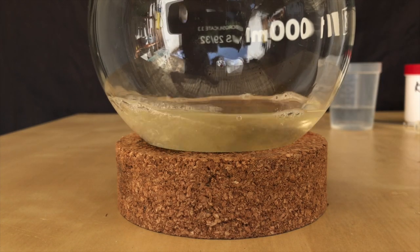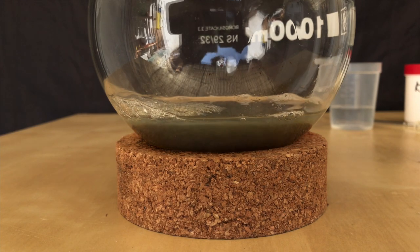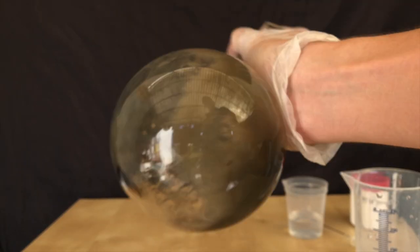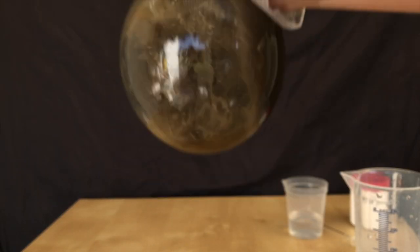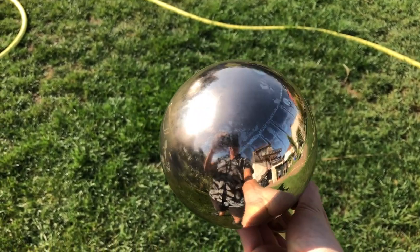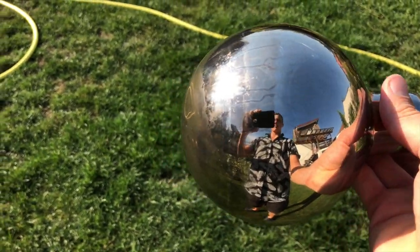Glucose solution was added and we saw this immediate color change. I moved the camera and then shook the flask for about 2 minutes. After rinsing it with distilled water, we didn't get the perfect mirror, but it still looks interesting.